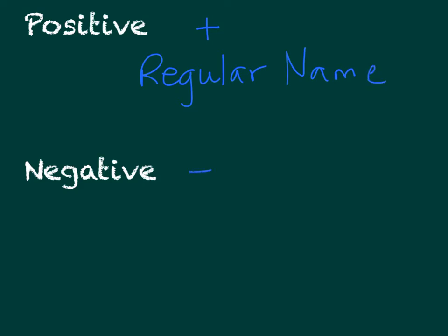Negative ions, on the other hand, change their ending to -ide. For example, instead of sulfur, it would become sulfide.